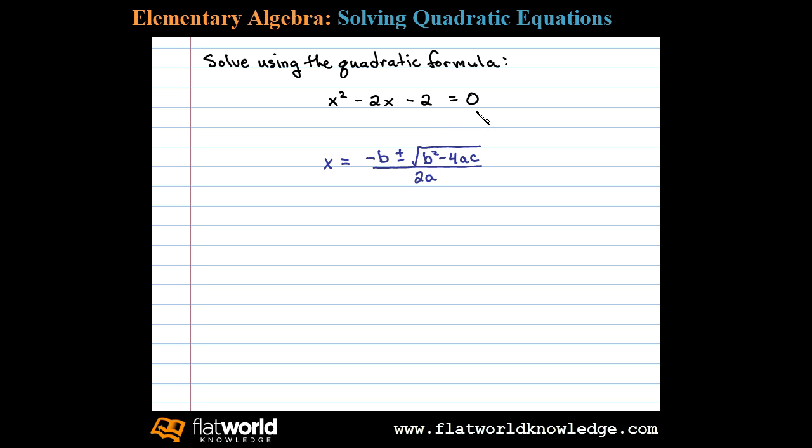In this case, a is equal to 1, that's the coefficient of x squared. B is equal to negative 2, that's the coefficient of x. And c is equal to negative 2, that's the constant term.